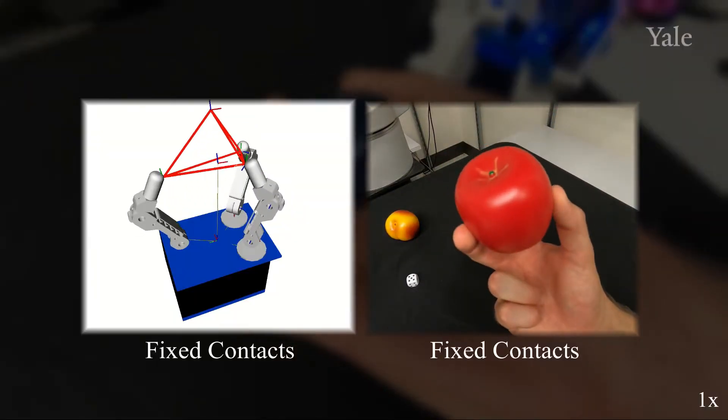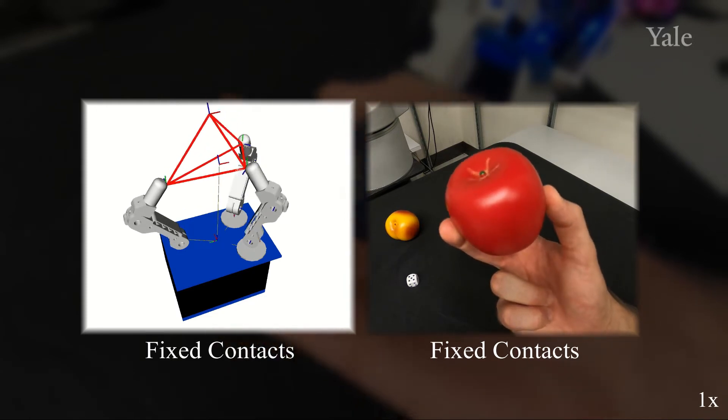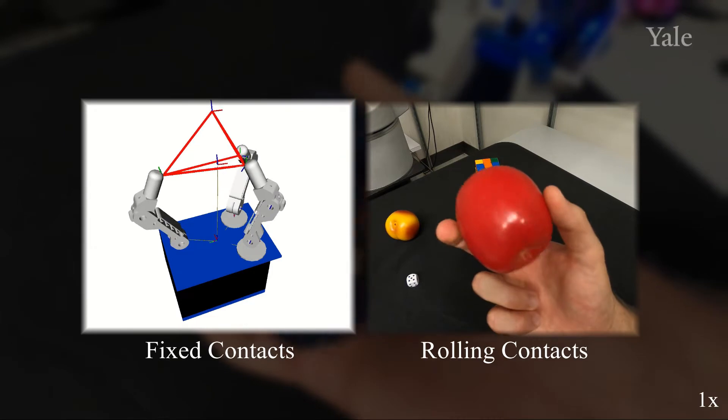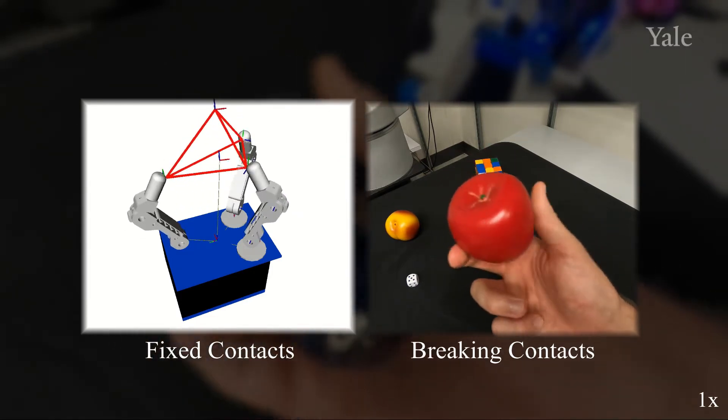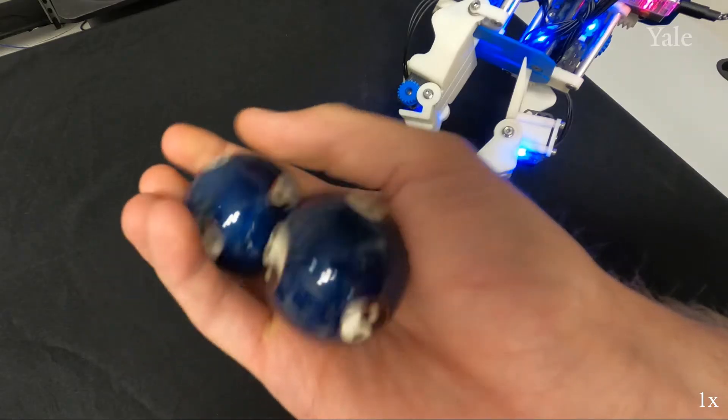Traditional approaches of robot manipulation, however, typically assume that the contacts remain static during the entire process. While this simplifies the computation involved in modeling and control, it also limits the workspace and therefore the capabilities of the hand. Moreover, this assumption is contrary to what we see in human manipulation, where the contacts are always in motion.